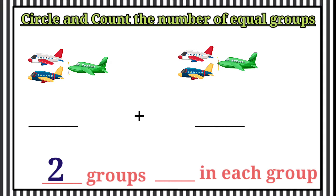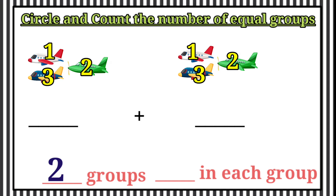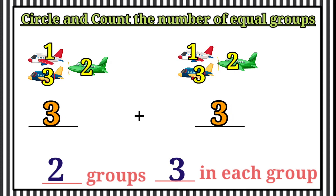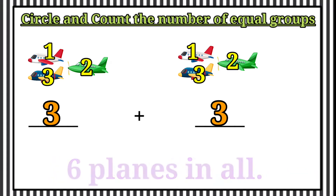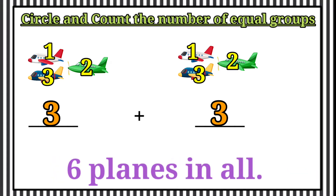Then we will count how many in each group. 1, 2, 3. Here 3 in each group. So, therefore the answer is 6 planes in all.